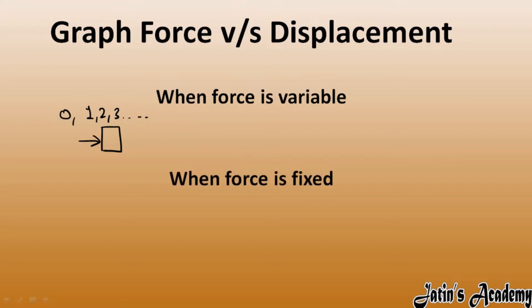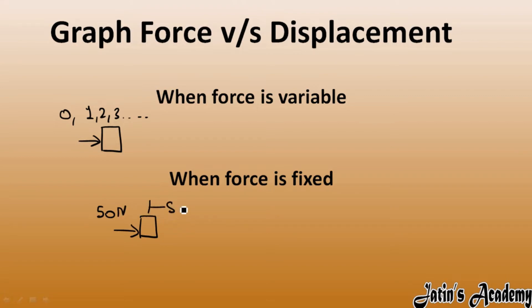Next we have when force is fixed. Force is fixed means, for example, on a block I am applying a 50 Newton force. Now displacement occurs in the direction of force, but 50 Newton remains constant. So this is an example where force is fixed.